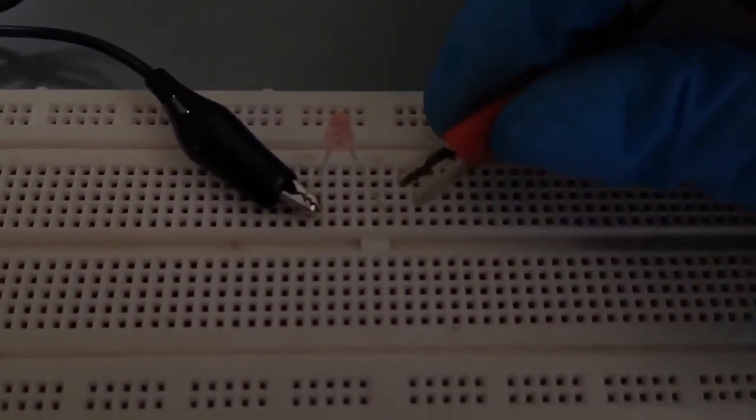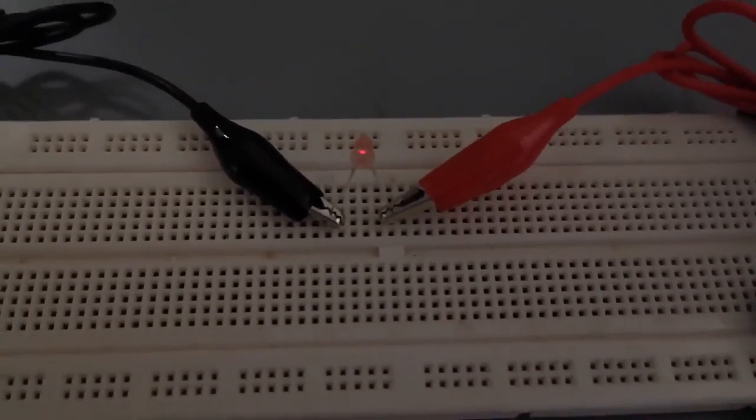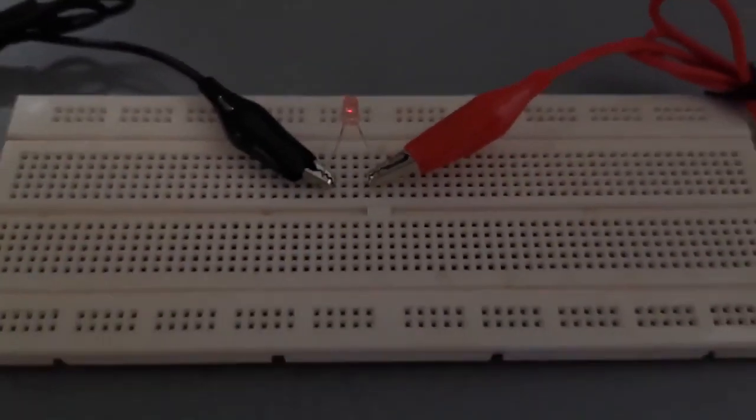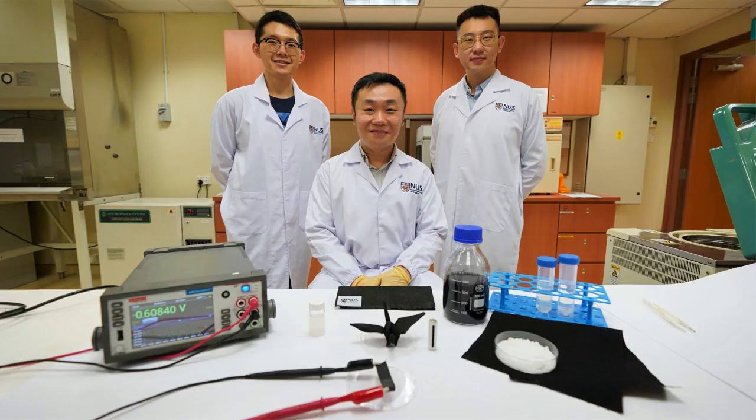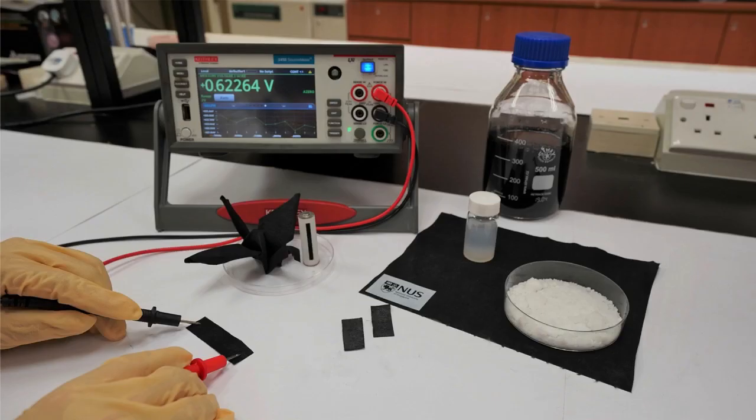A team of researchers from the National University of Singapore's College of Design and Engineering has developed a new moisture-driven electricity generation device made of a thin layer of fabric, about 0.3 mm in thickness, sea salt, carbon ink, and a special water-absorbing gel.